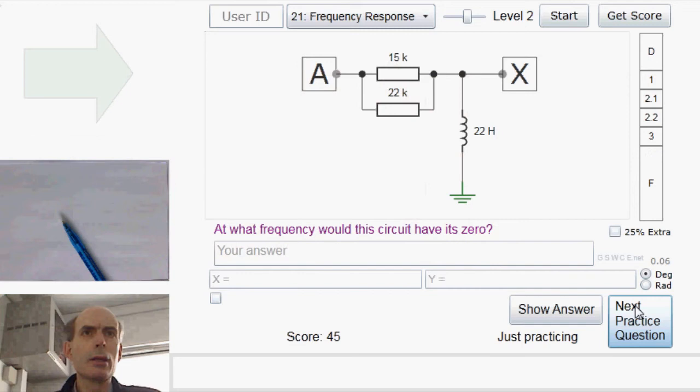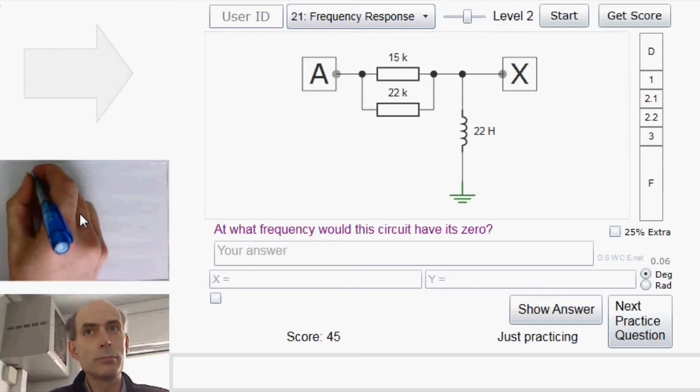At what frequency would this circuit have its zero? Well, we could go through the analysis again, and that would look something like this. We have a resistor up here, and an inductor down here, going to ground.